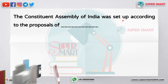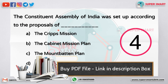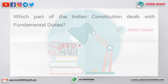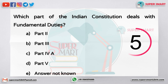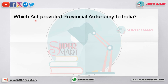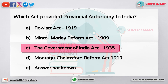The Constituent Assembly of India was set up according to the proposal of dash — the answer is the Cabinet Mission Plan. Which part of the Indian Constitution deals with fundamental duties? The answer is Part 4A. Which act provided provincial autonomy to India? The answer is the Government of India Act 1935.